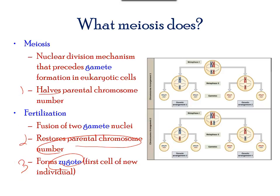As seen in the image here, the two chromosomes — blue and red — are shown to produce four genetic variations. In the next coming slides, we will understand these processes better.